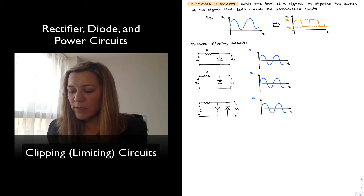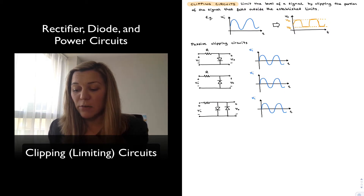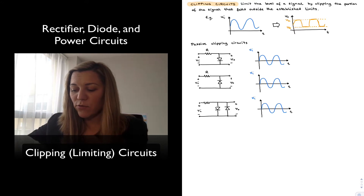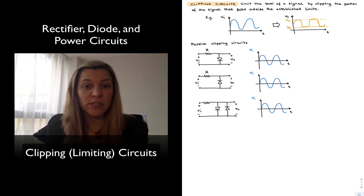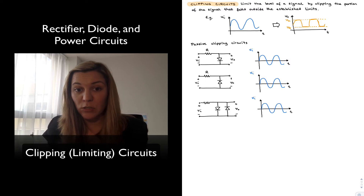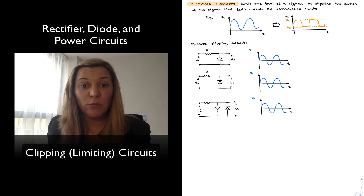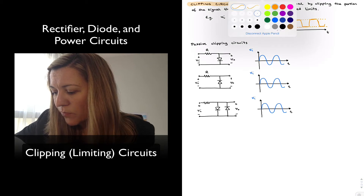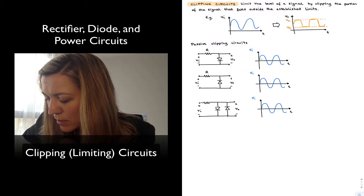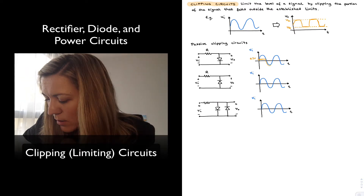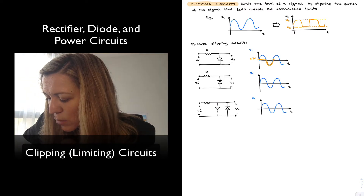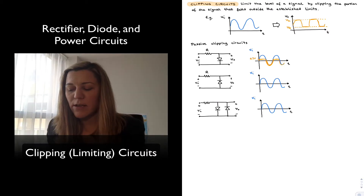In the first case, we can see that when the values of VIN are positive and exceed 0.7 volts, that diode is going to turn on, and so the voltage across the output for values of VIN exceeding 0.7 volts for a silicon diode are just going to be equal to 0.7, even if the input signal continues to increase. We are going to get more voltage across the resistor so that the voltage across the diode will remain at 0.7 volts. So our output voltage is clipped at 0.7 volts.